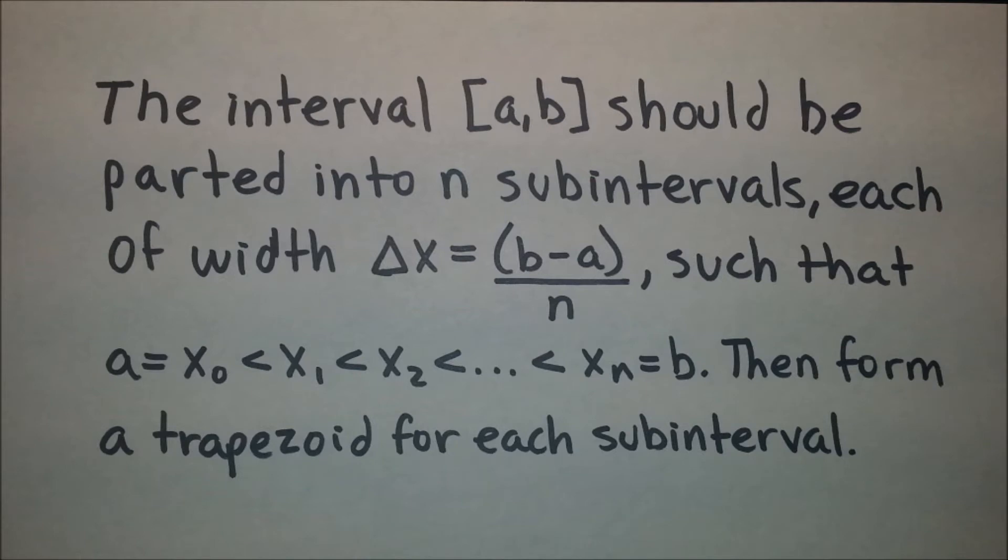The interval [a,b] should be parted into n subintervals, each of width Δx = (b-a)/n, such that a = x₀ < x₁ < x₂ < ... < xₙ = b. Then form a trapezoid for each subinterval.